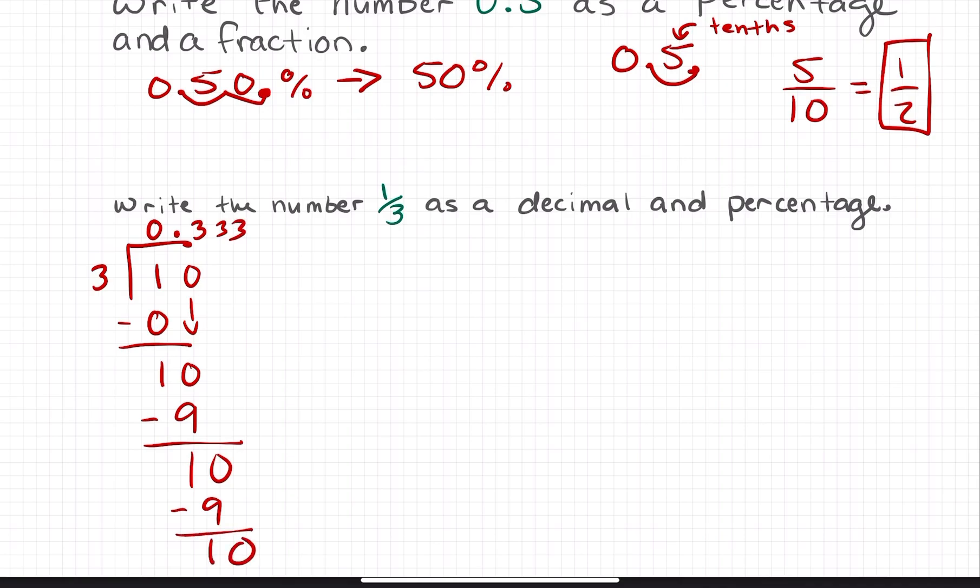I can say that 1 third written as a decimal gives me 0.3. Instead of writing an infinite amount of threes, I'll put a bar above the three. This is 0.3 repeating. This is a rational number. By definition, repeating decimals are rational.